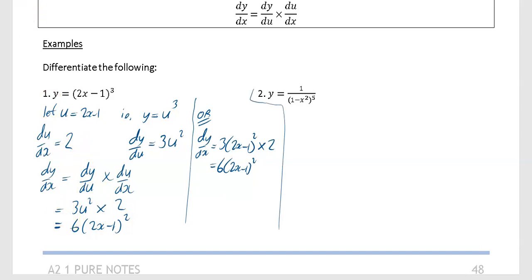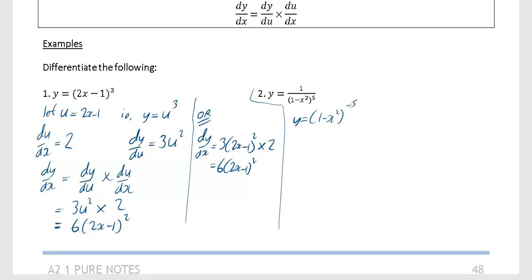For this second example, first get it in index form: y equals 1 minus x squared to the power of minus 5. Let y equal u to the minus 5 and u equals 1 minus x squared. Then dy by du equals minus 5u to the minus 6 - multiply by the power, reduce the power by 1. And du by dx equals minus 2x.